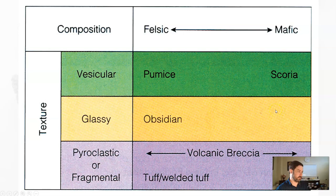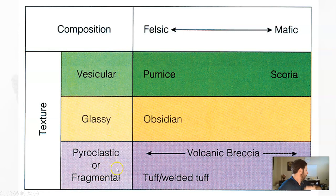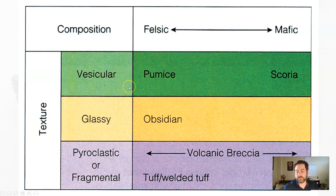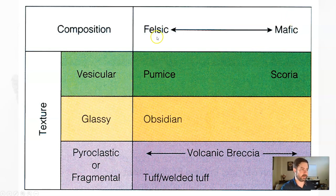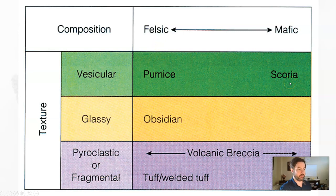For some of those other textures like vesicular, glassy, or pyroclastic: vesicular rocks — scoria is darker and mafic, pumice is lighter in color and felsic. Felsic means pumice has more silicate minerals; scoria has less.